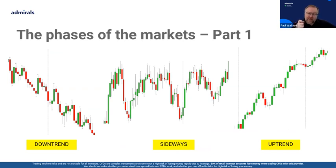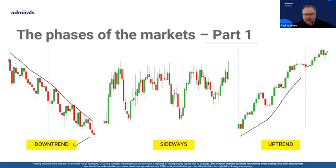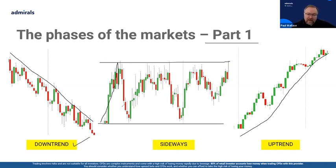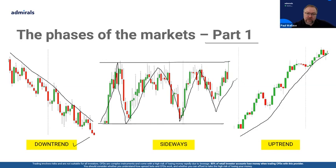Let's talk about the phases of the markets with regards to understanding how we could trade breakouts. Personally I would see us as having five phases: a downtrend where price is making lower lows and lower highs; an uptrend where price is making higher highs and higher lows; and a period of range-bound movement where price is going sideways. Good trends leap off the chart at you. The challenge is that markets do not trend as often as we would like.